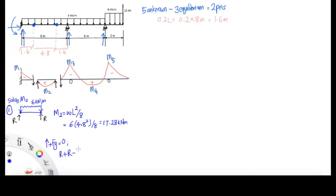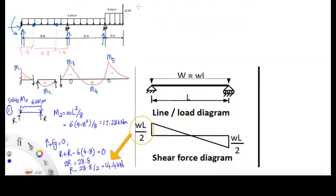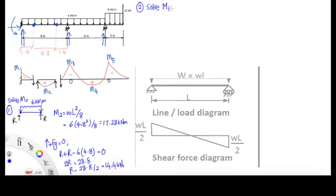The next step is to use the Fy equilibrium — forces upward are positive — to calculate the reaction R at the pins. With 2R minus 6 times 4.8 (converting the UDL into a point load), you're going to get R equal to 14.4 kN. You can also solve this R directly using the formula WL/2.